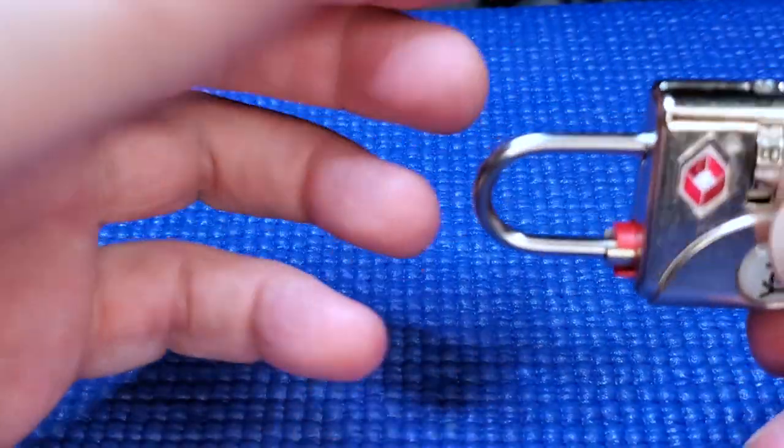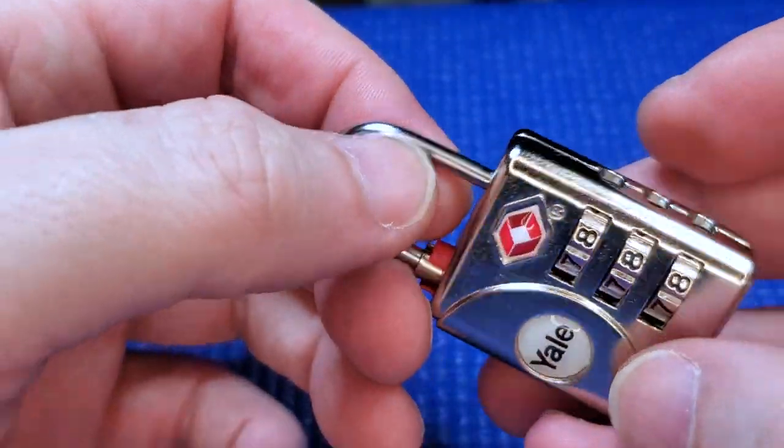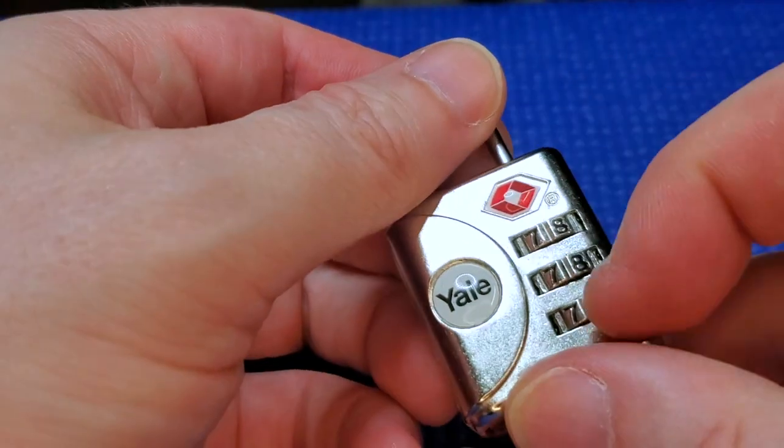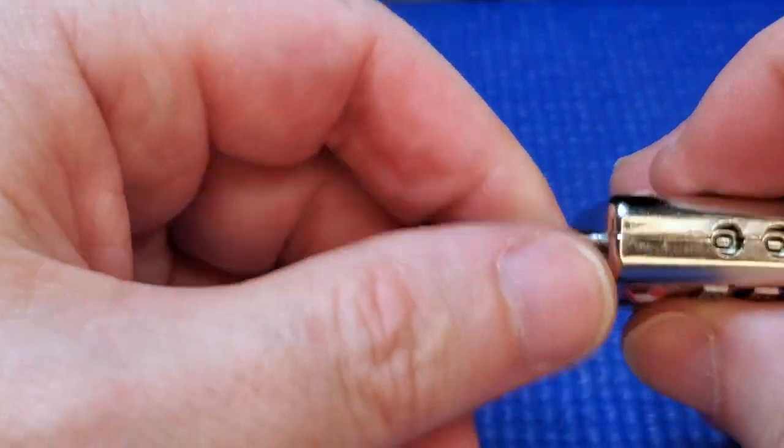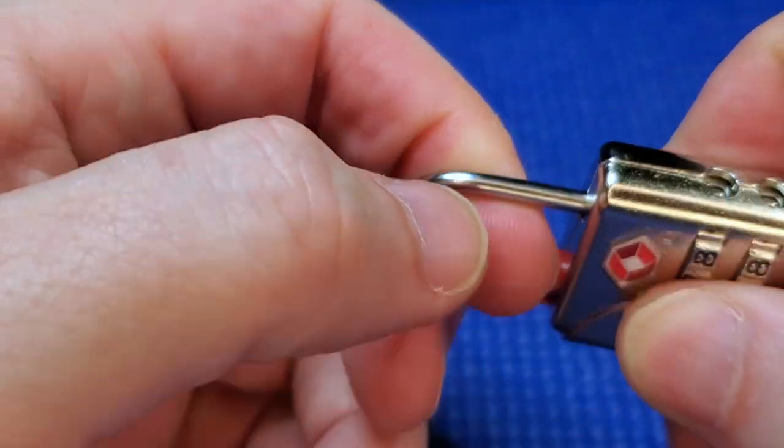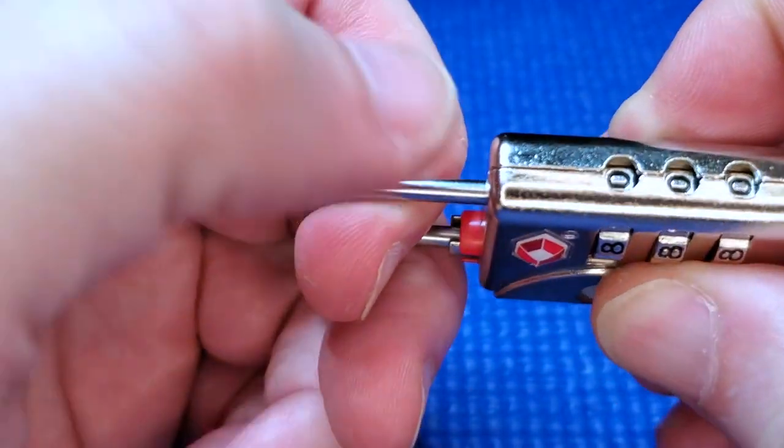Okay, since there's only three wheels it doesn't actually take long to get through all the combinations or permutations, whatever you want to call it. So we're going to pull up on the shackle and we're just going to go through all the combinations from zero zero upwards.